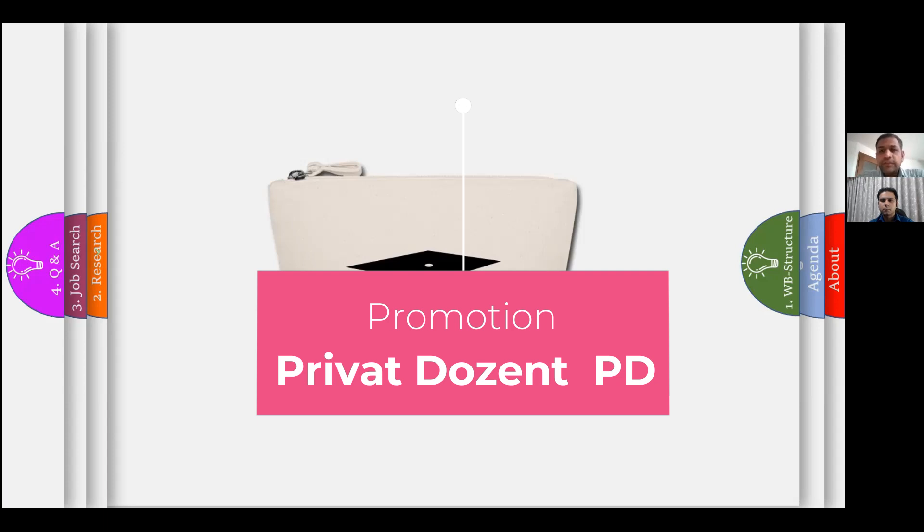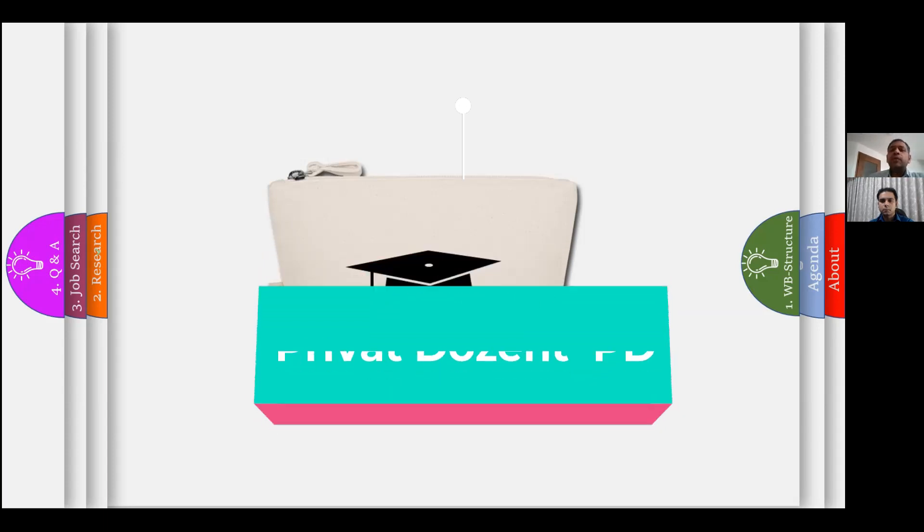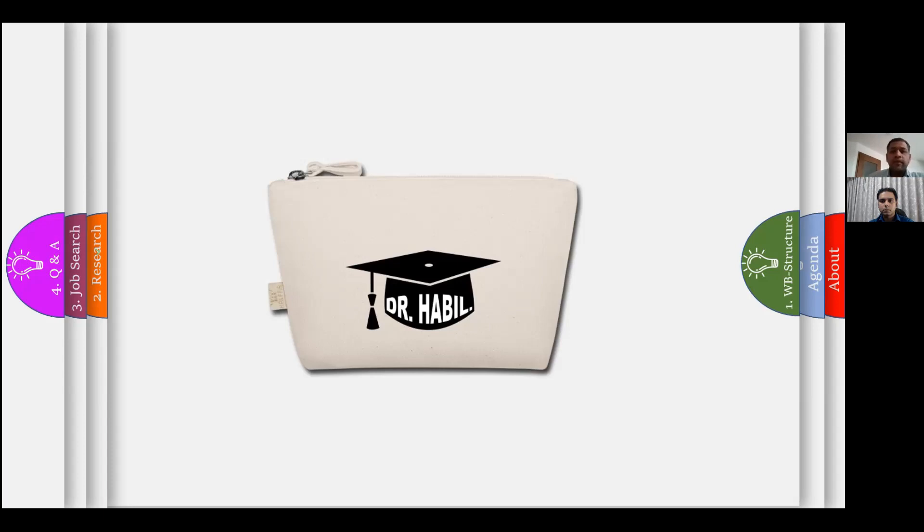After habilitation you can get a title of Privatdozent, or in short they call it PD, which then entitles you to get a professor job. Once you get a professor job, then you can write professor. Unlike India, when you start working in a medical college you directly get a title of assistant professor or associate professor or professor. It's not in a similar way here. You need to have first promotion and then the habilitation so that you can build up a teaching career and a research career.